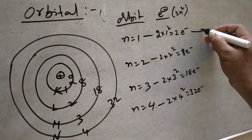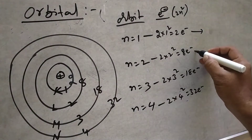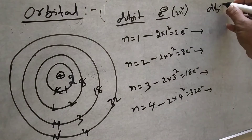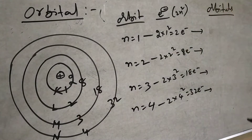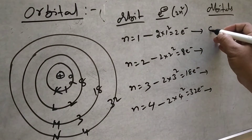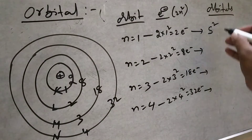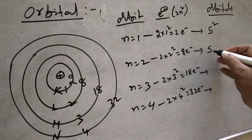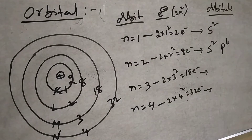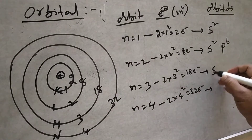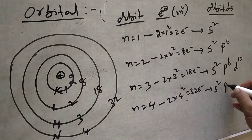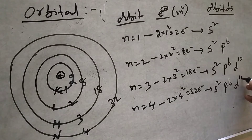An orbit contains orbitals. The 1st orbit contains only 1 orbital — that is S. The 2nd orbit contains 2 orbitals — S and P (2 and 6). The 3rd orbit contains S, P, and D. The 4th orbit contains S, P, D, and F.